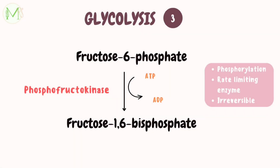In step 3, fructose-6-phosphate is further phosphorylated to fructose-1,6-bisphosphate by an enzyme called phosphofructokinase. This enzyme is the rate-limiting enzyme of glycolysis and is responsible for catalyzing the second phosphorylation step. It also uses a molecule of ATP. Steps 1, 2, and 3 are together called the preparatory phase.